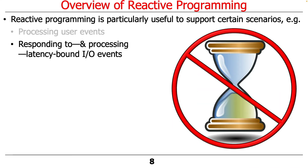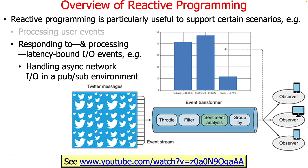Another place that reactive programming is very useful is responding to and processing latency-bound IO events. A good example would be a publisher-subscriber environment — for instance, Twitter has feeds that come out of the Twitter servers. When people tweet, the tweet goes to the server and then gets disseminated out to all the people who are subscribing to those feeds.